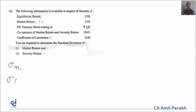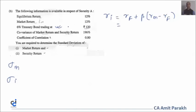Using the CAPM model: security return = risk-free return + beta × (market return − risk-free return). For the risk-free rate, we have a 6% treasury bond trading at 120. Taking it as a perpetuity, the yield = 6/120 = 5%. So: 12% = 5% + beta × (12% − 5%), which gives beta = 1.